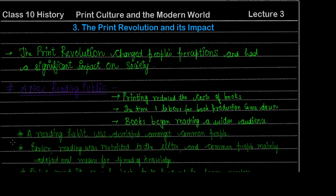The biggest impact was that a new reading public came into being. When the Gutenberg Press started and book production increased, printing was simplified and this reduced the cost of books. The time and labor for book production also came down because the Gutenberg Press produced books much more easily. Because books were low cost and required less time and labor to produce, books began reaching a wider audience.